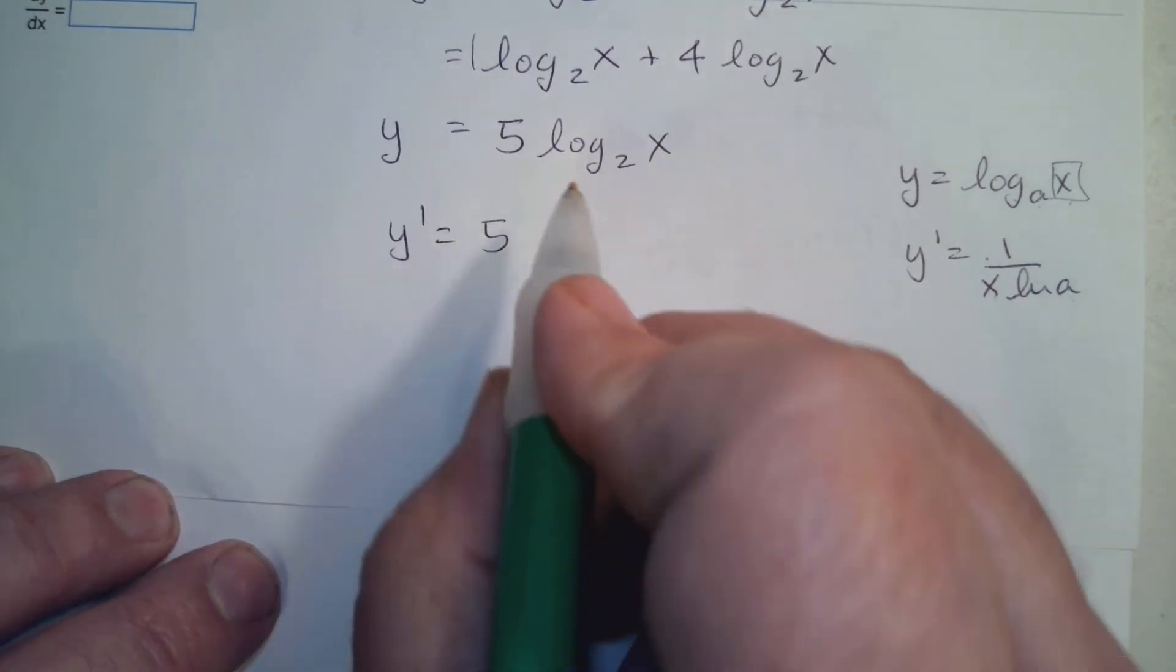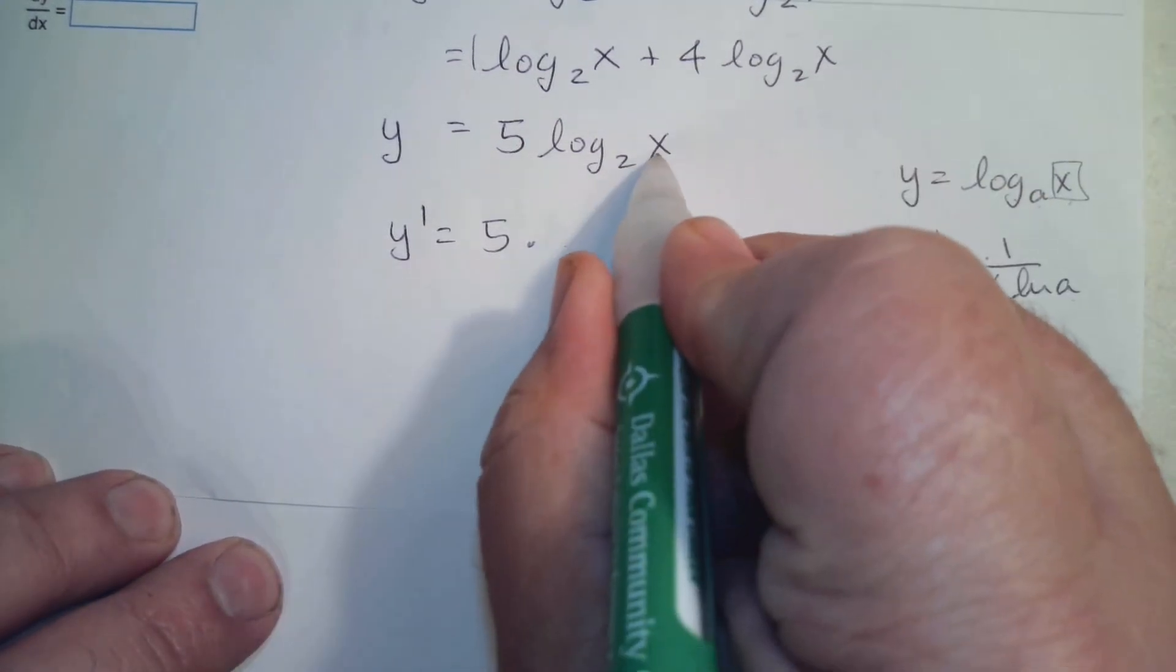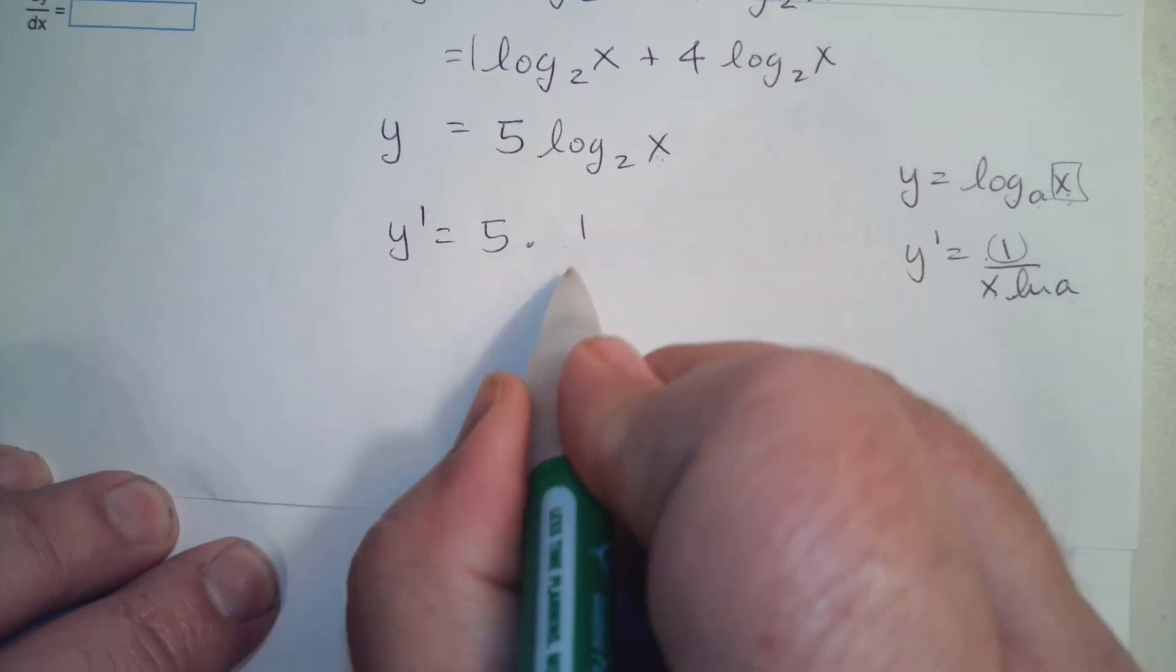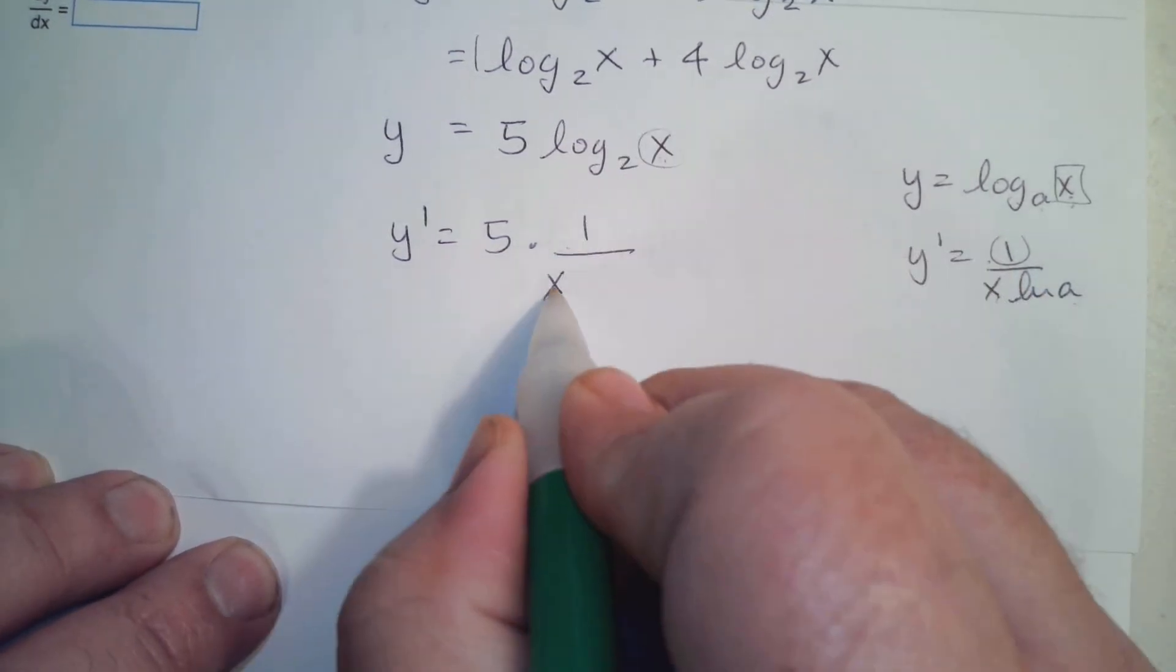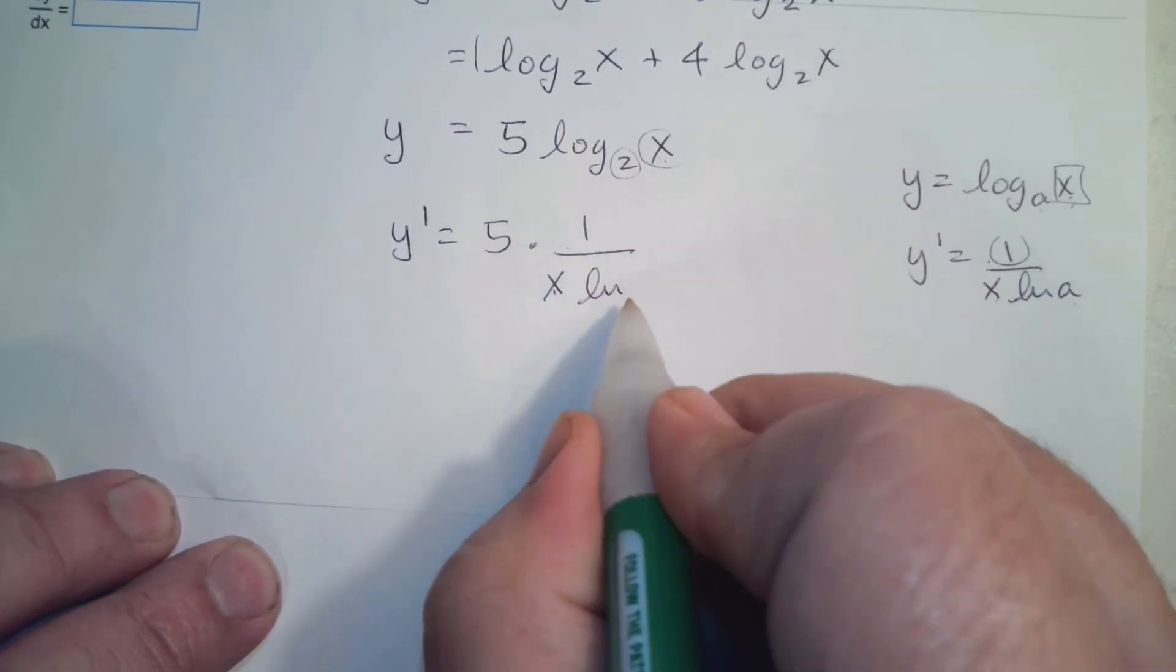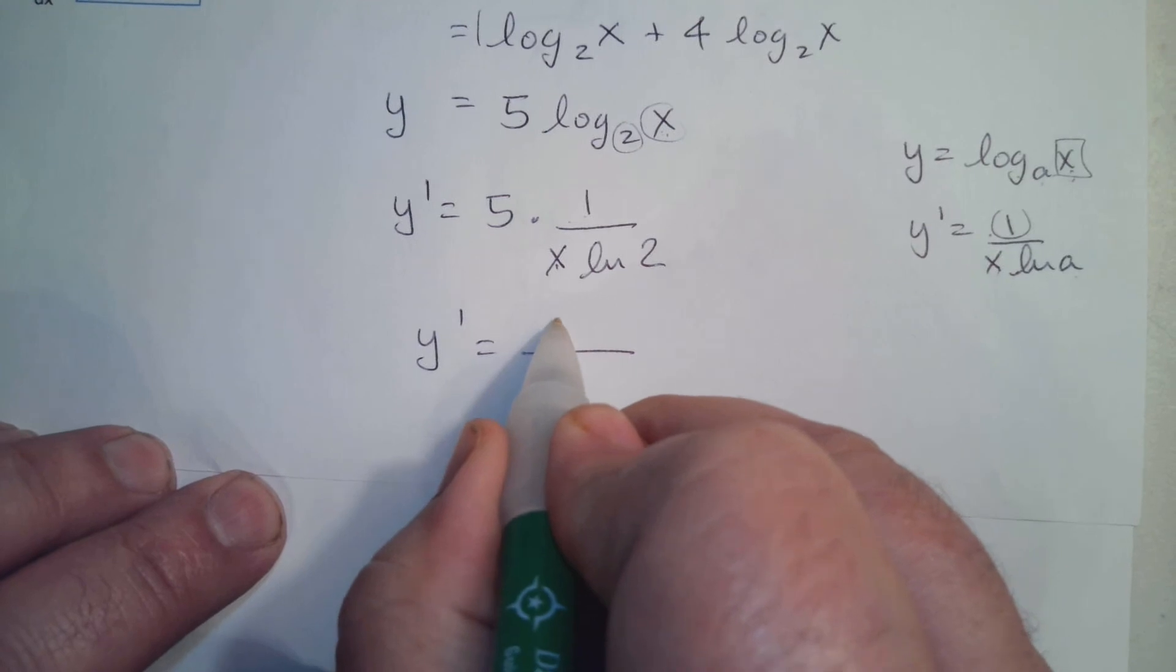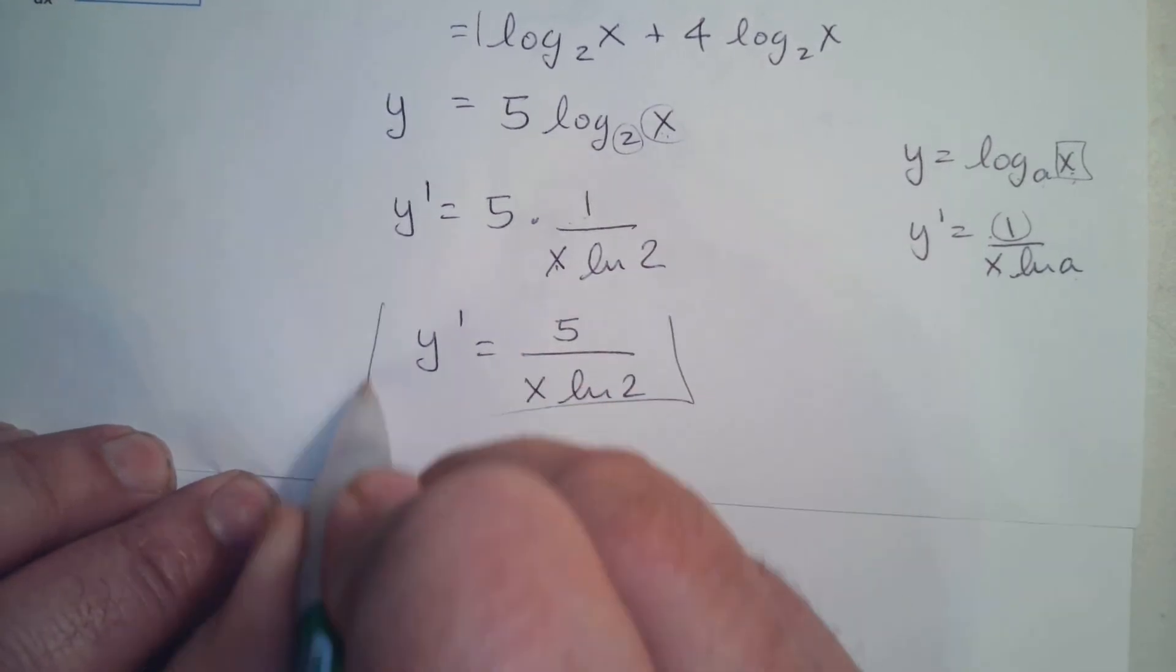Leading coefficient stays alone. So on top goes the derivative of what's inside. So the derivative of x is 1. And then the whatever here goes on the bottom times ln of the base. So 5 times 1 is 5 over x ln 2. And there's your answer.